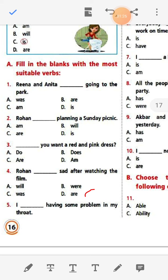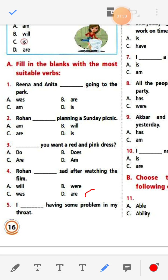Verb is an action word. Number one question: Fill in the blanks with the most suitable verbs. Rina and Anita dash going to the park.